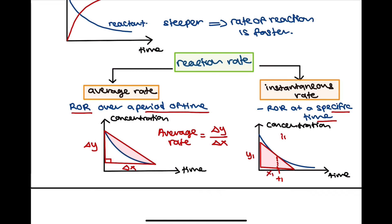Therefore, the instantaneous rate at T1 would be Y1 divided by X1. Remember, average rate is calculated for a period of time, whereas instantaneous rate is calculated at a specific time, and you have to draw a tangent for this.